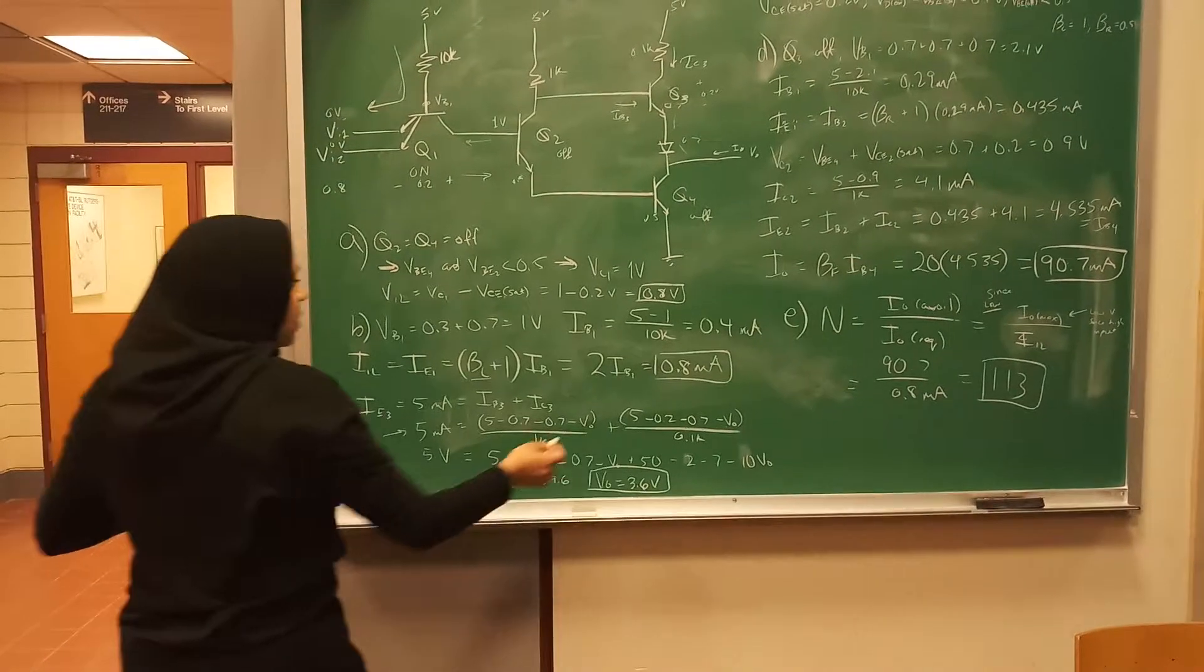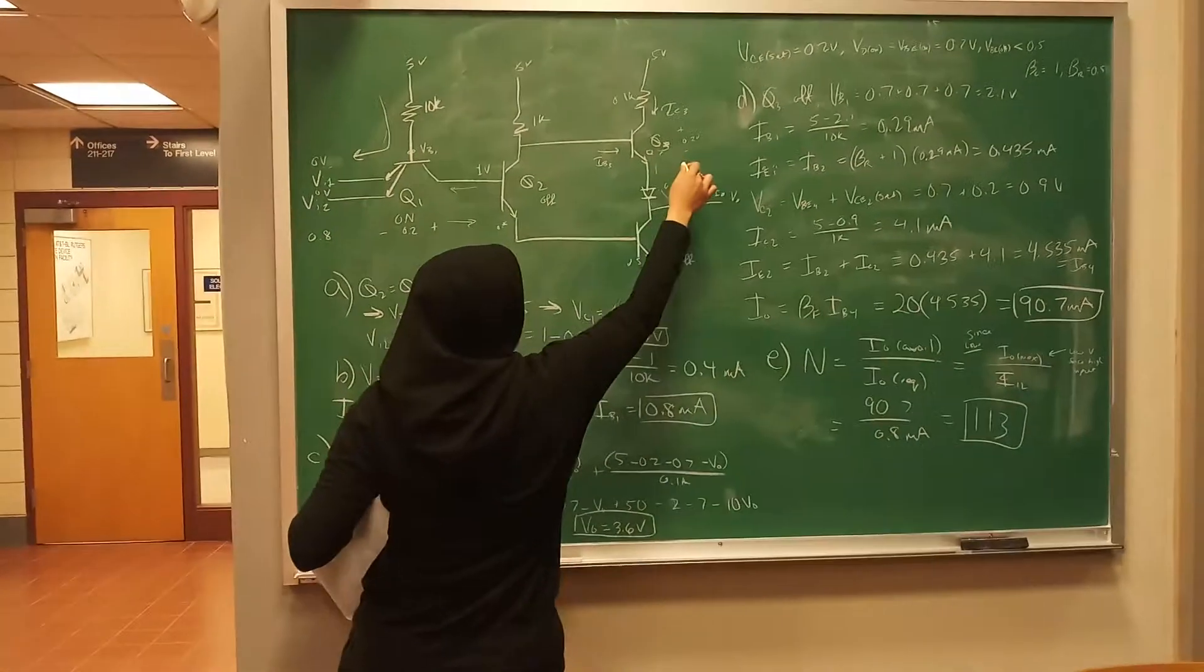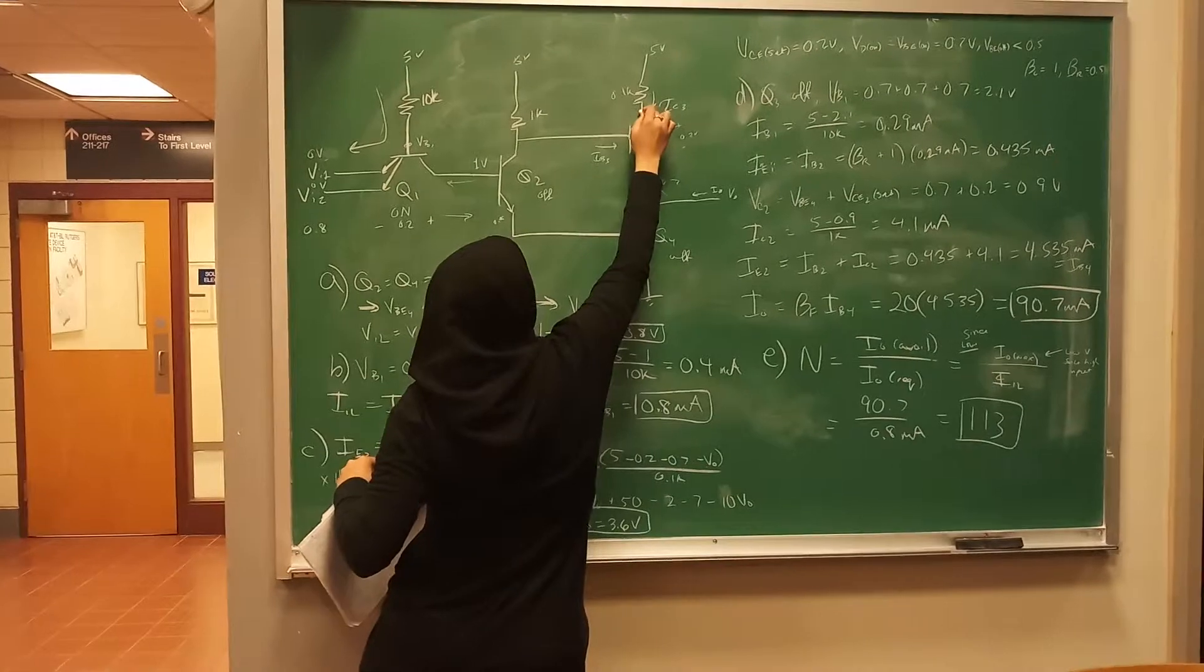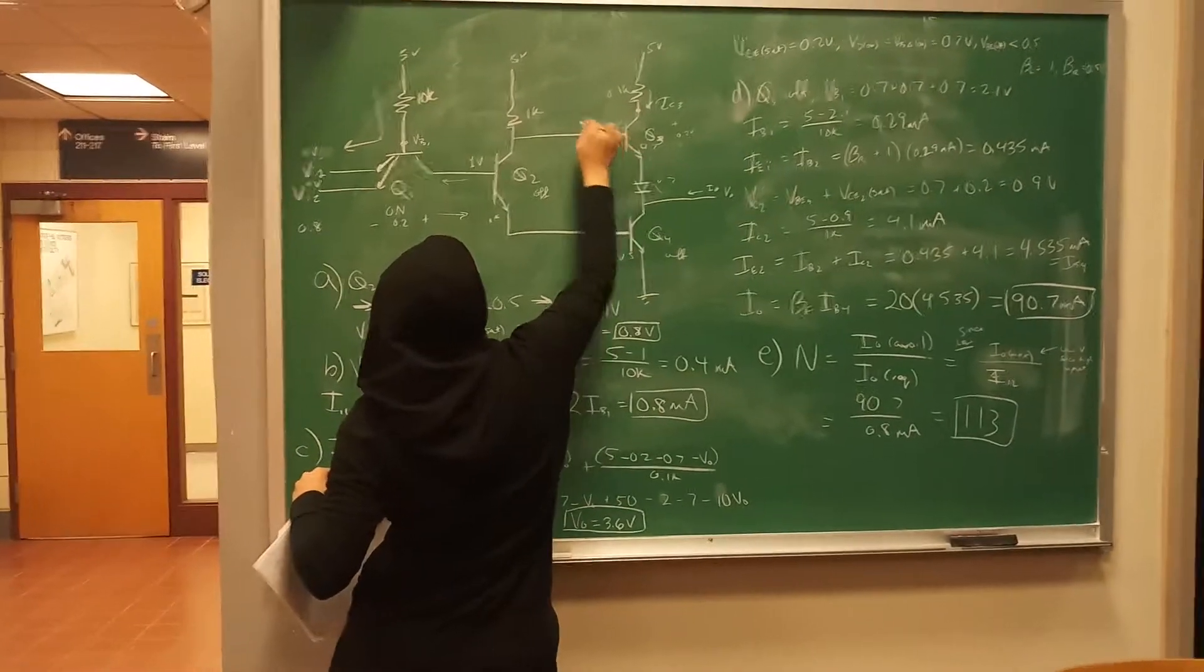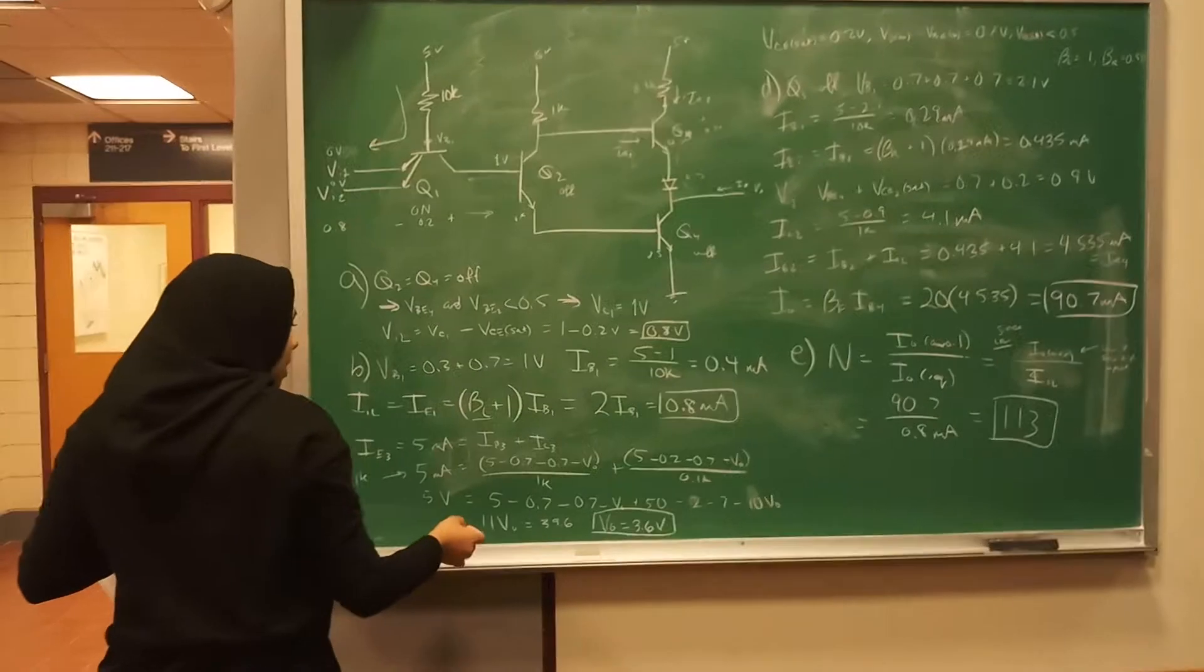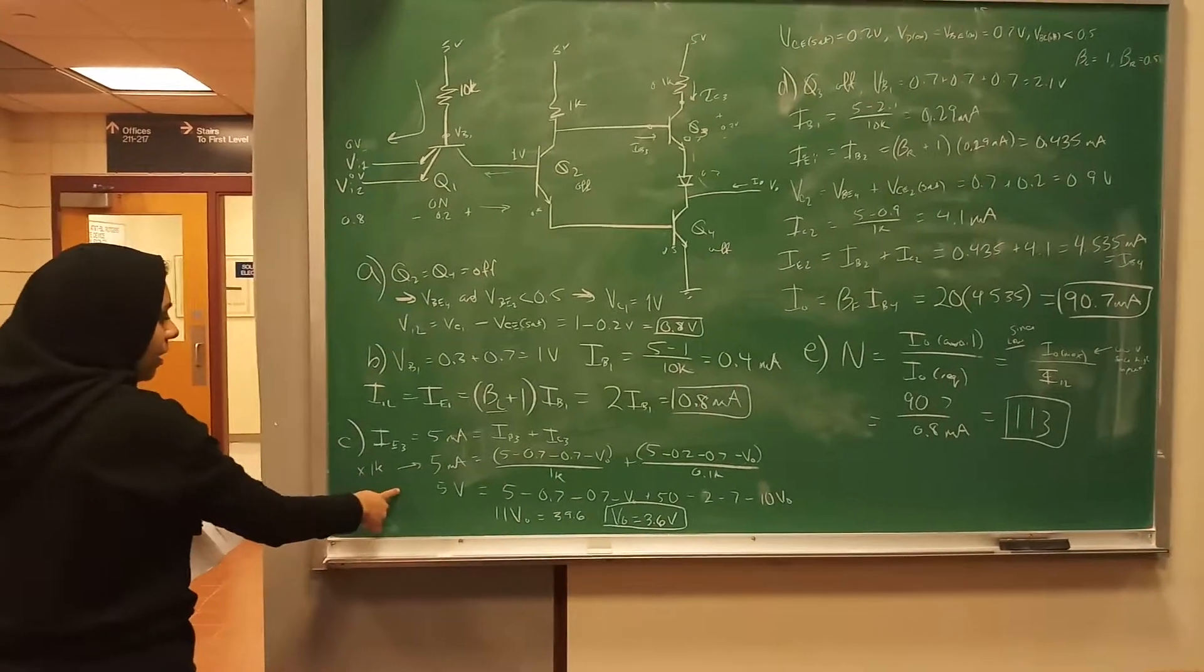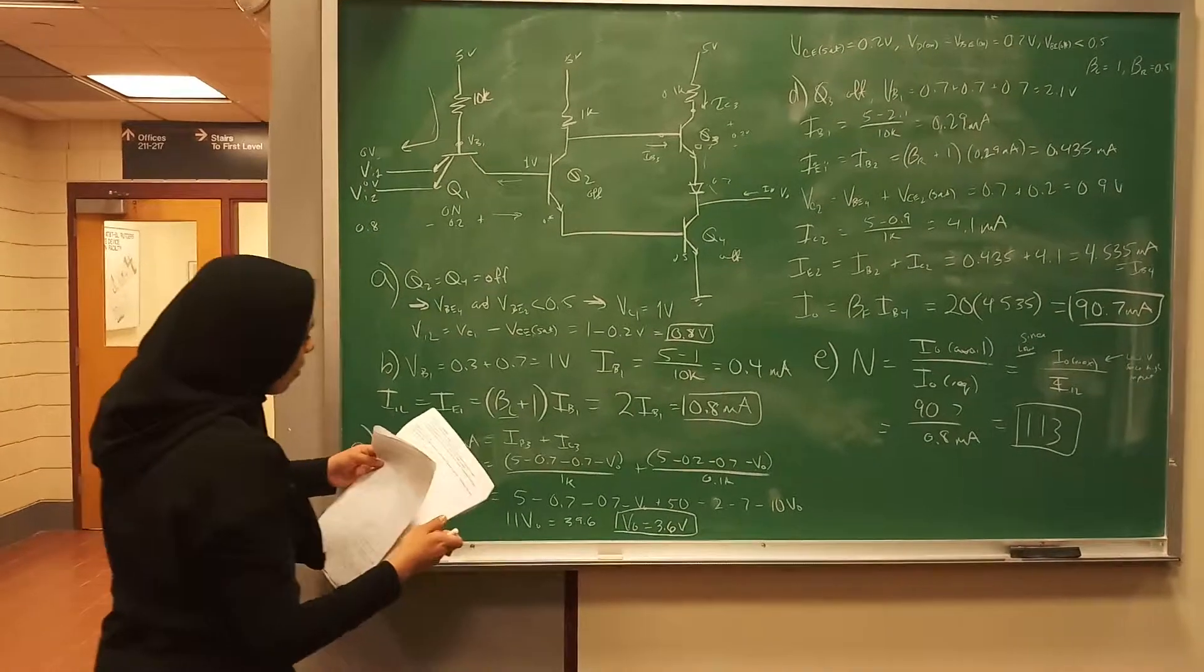So yeah, because it's V_out plus 0.7 plus 0.2 gives you this voltage right here. And then, same thing here, V_out plus 0.7 plus 0.7 is this voltage. So that's how you get that current. And then you multiply by 1k, and then you simplify, and you should get that.